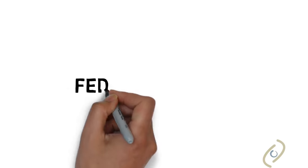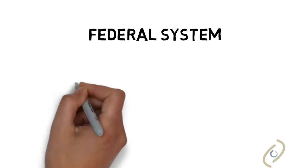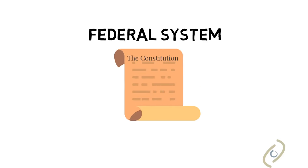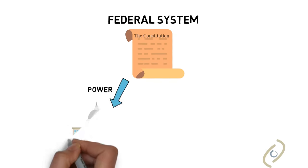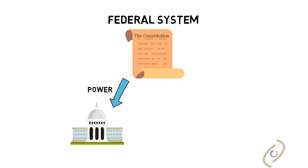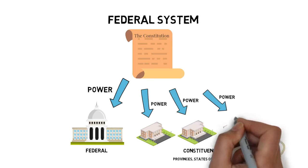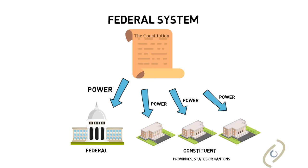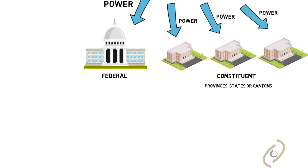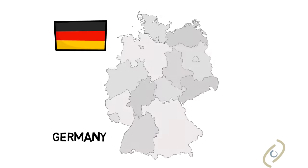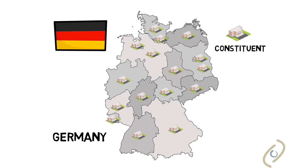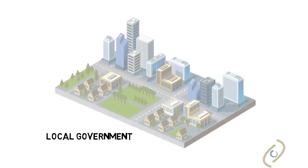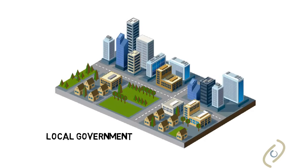The other is called a federal system. A federal system means the constitution divides power between two or more orders of government. A written constitution divides power between a government for the whole country — sometimes called a federal government — and constituent units, which may be called provinces, states, or cantons. Constituent means "make up the whole." Some federal countries constitutionally recognize local governments, like municipalities.